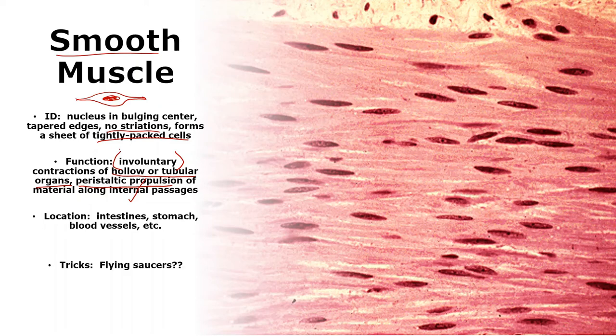Tricks: flying saucers, kind of hard, right? Let me highlight: there's a cell with a bulging middle. Here's another cell with a bulging middle. There's a cell here with a bulging middle and tapered edges. Bulging middle and tapered edges. This is classic smooth muscle.